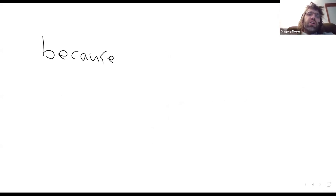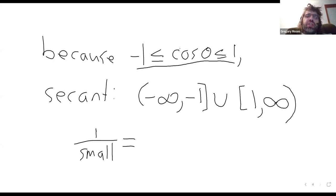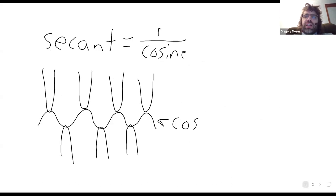And finally, I feel like I garbled the explanation a bit. So let's try this again. Because the cosine is stuck between negative one and positive one, the secant is stuck in the interval from negative infinity to negative one, union one to positive infinity. And that's because when you take a small number and you put it in the denominator of a fraction, it makes the fraction big.